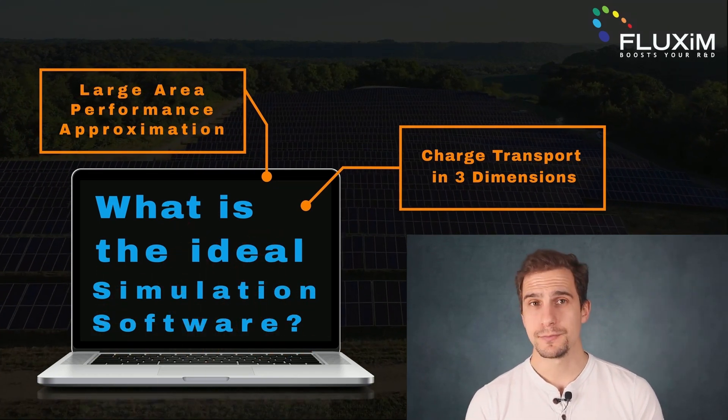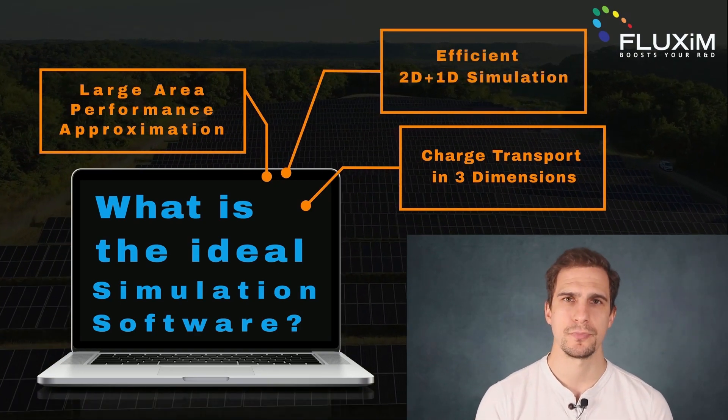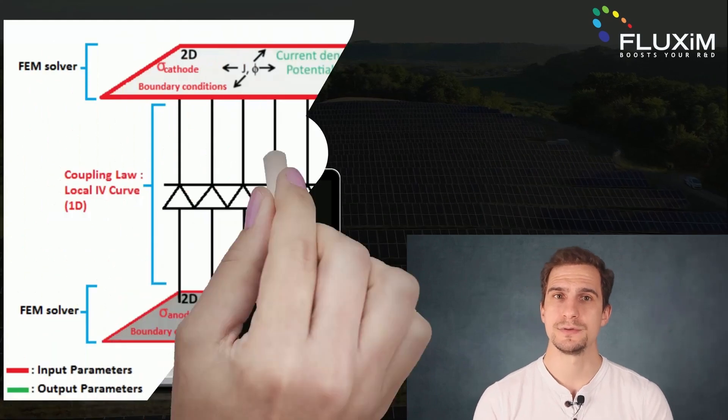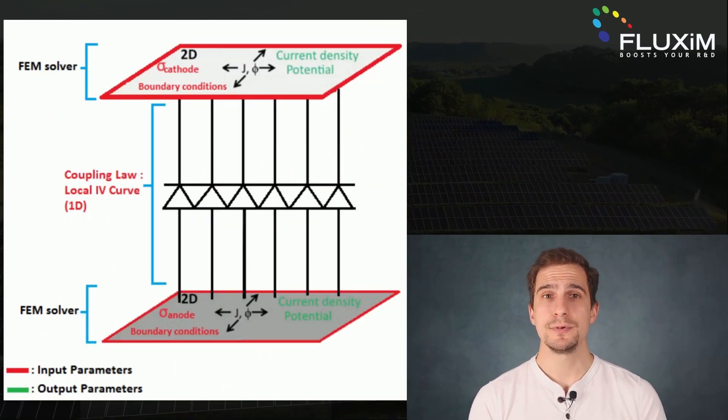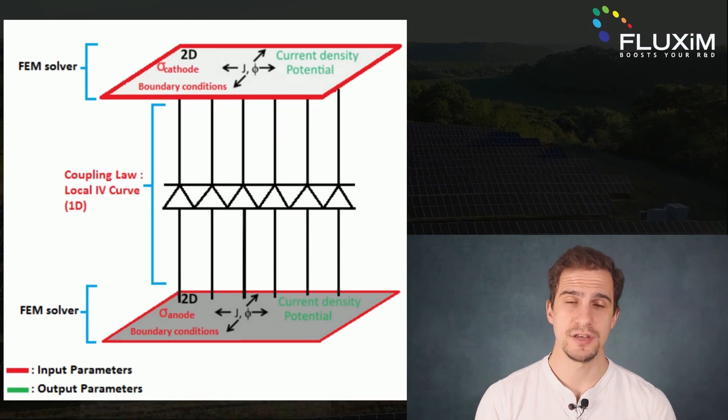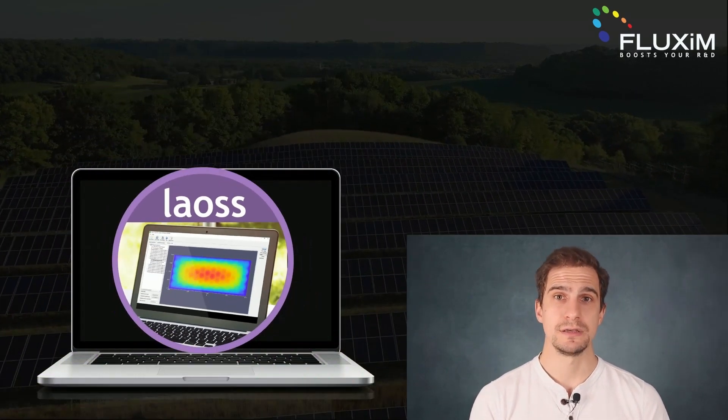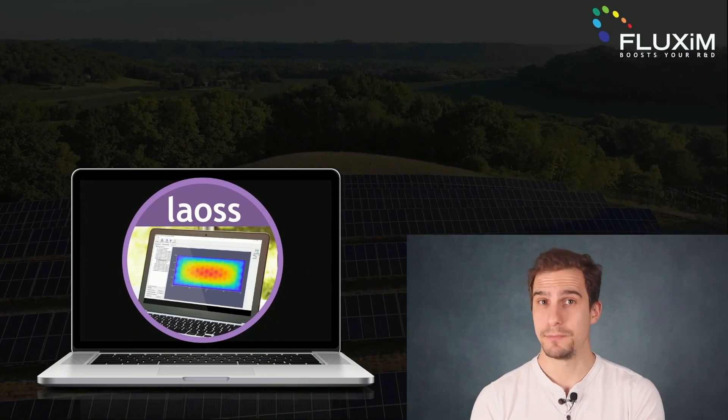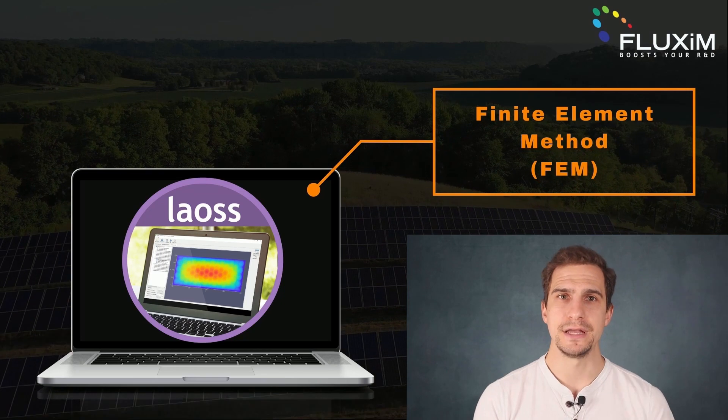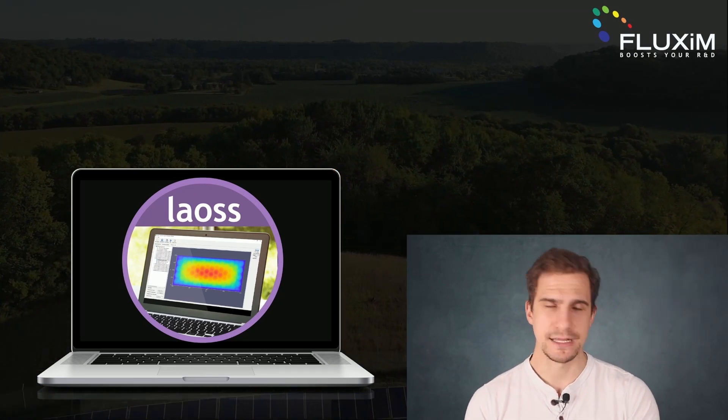A more efficient approach mimics the 3D transport by splitting the simulation in 2D and 1D simulations. The 2D simulation describes the current flow in the electrodes, while the 1D simulation couples the two electrodes through the provided JV curve. The simulation software Laos from Fluxim solves the 2D simulation of the electrodes with a finite element method, and it allows to evaluate how the key parameters of the solar cell scale with the module layout and its dimensions.